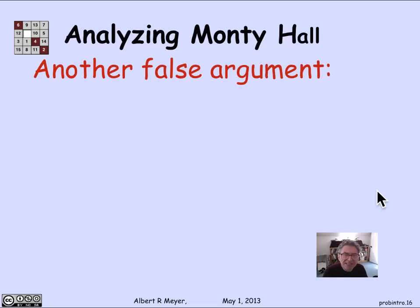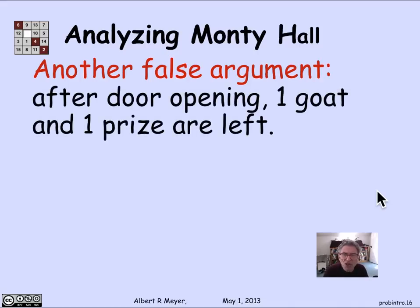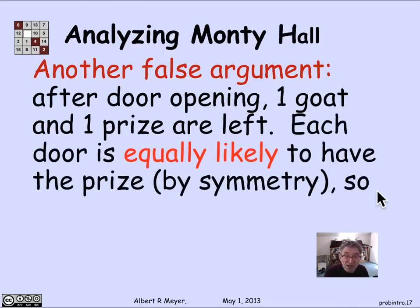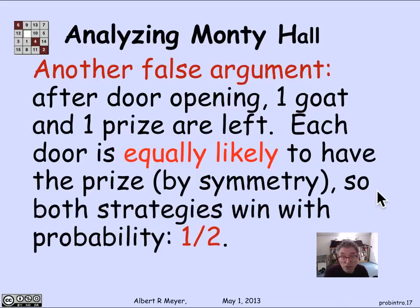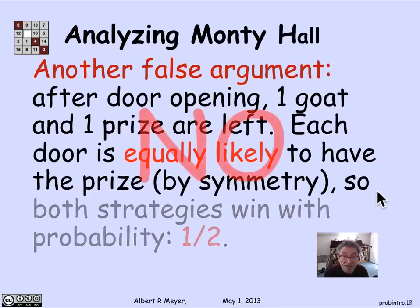The other false argument considers what happens after Carol has opened a door. The contestant has picked a door, Carol opens a door and shows a goat, and what's left are two closed doors — one with the prize and one without. By symmetry of the doors, the contestant has no idea what's behind either remaining door, so they're equally likely to contain the prize. The argument says sticking or switching between those two doors doesn't matter, and each wins with the same 50-50 probability. That's wrong too.